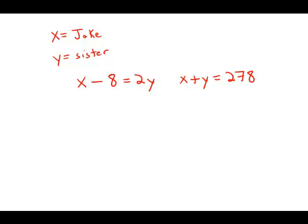I think the easiest way to solve this is to solve the first equation for X. So, just add 8 to both sides, and we get X equals 2Y plus 8.